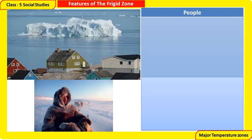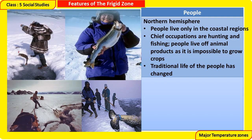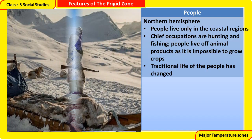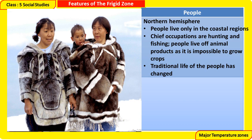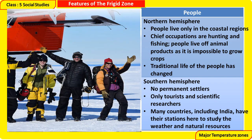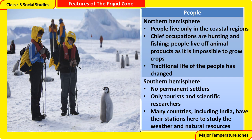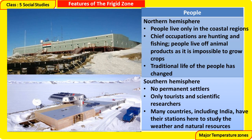People of the Frigid Zone: Northern Hemisphere — people live only in the coastal regions. Chief occupations are hunting and fishing; people live off animal products as it is impossible to grow crops. Traditional life of the people has changed. Southern Hemisphere — no permanent settlers; only tourists and scientific researchers. Many countries, including India, have their stations here to study the weather and natural resources.